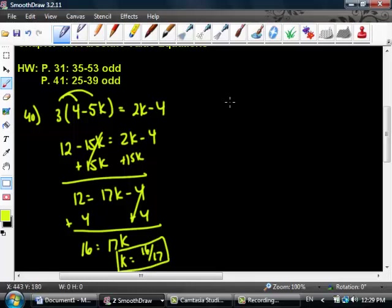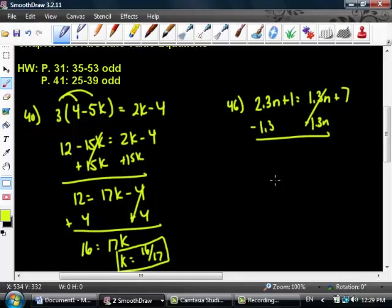Let's do something a little bit more foreign looking. 46. 2.3n plus 1 equals 1.3n plus 7. Decimals. You can either multiply everything by 10 or understand that when I subtract 1.3n from both sides, how many n's am I going to have? 2.3 minus 1.3. 1. I'm going to have n plus 1 equals 7. n equals? Joshua? 6. Good job.